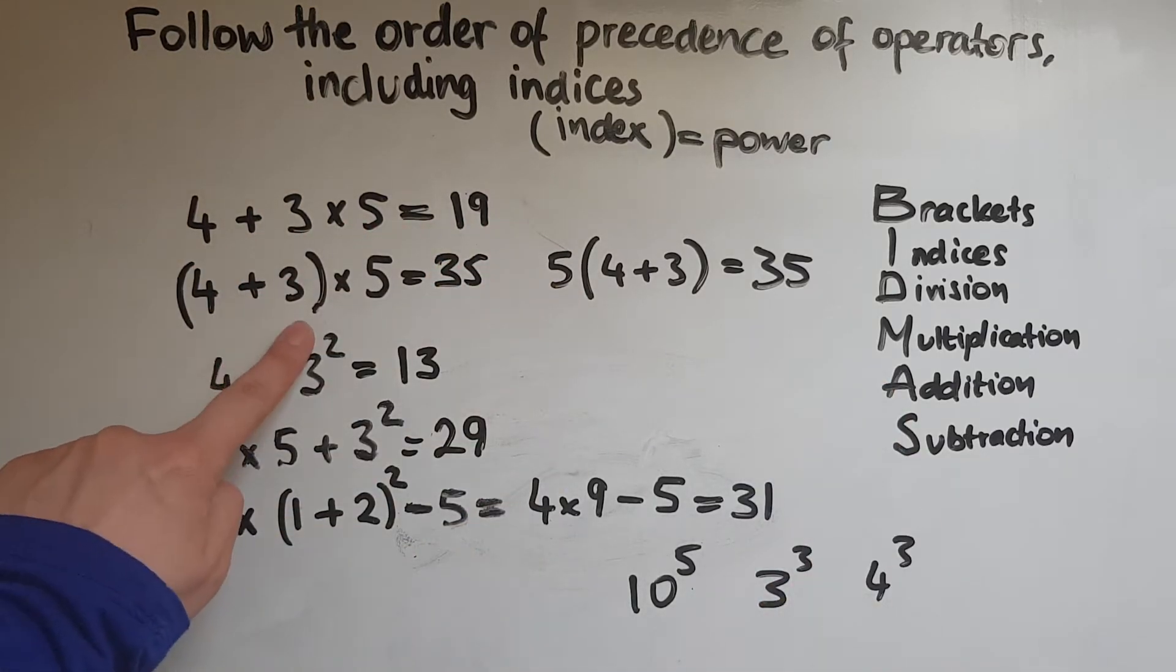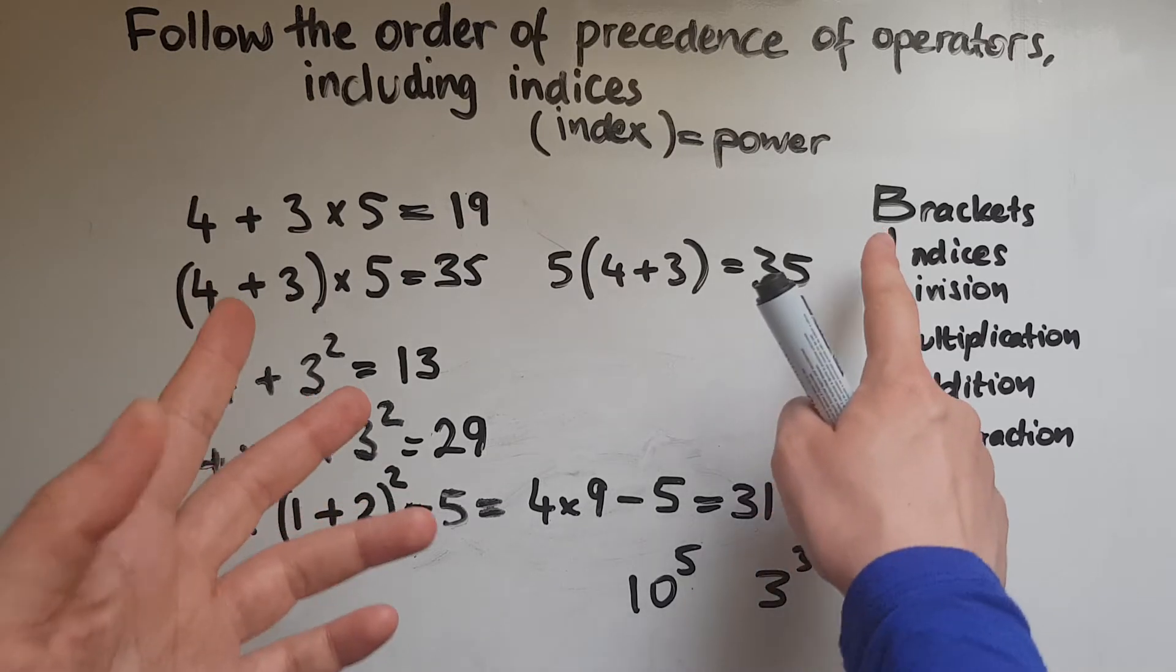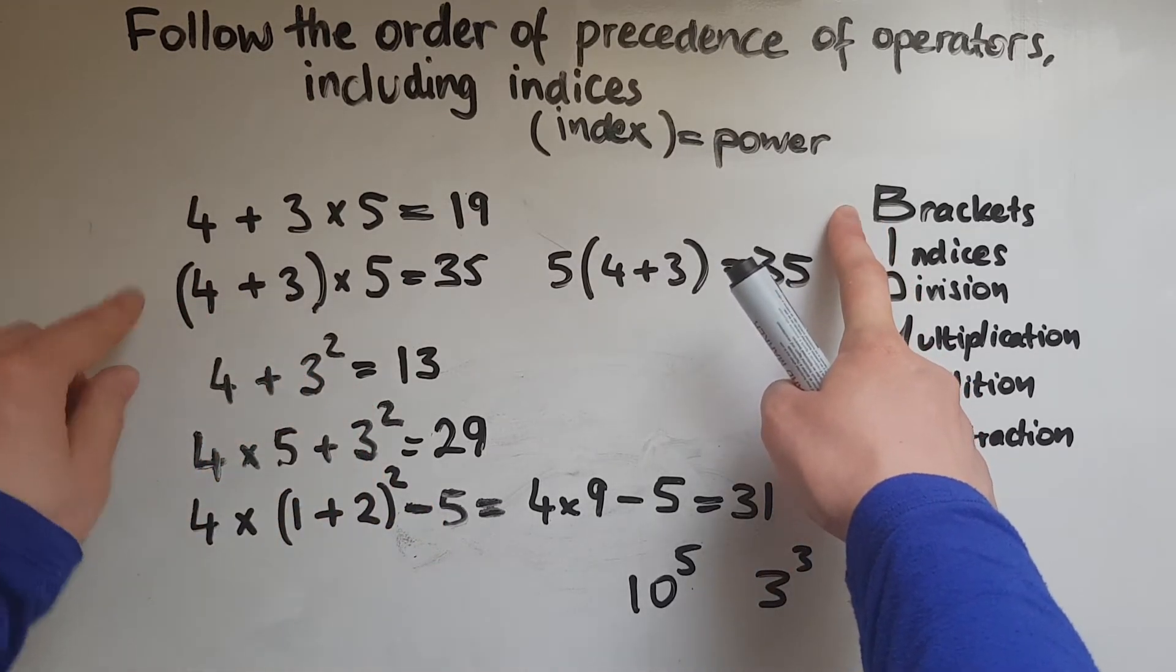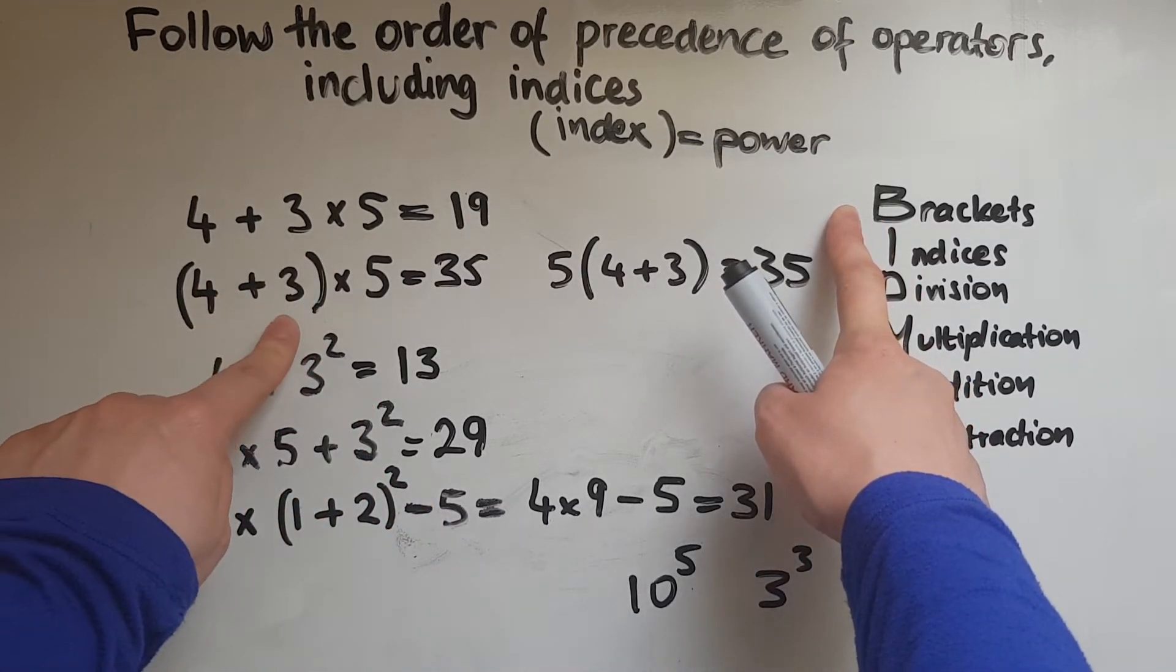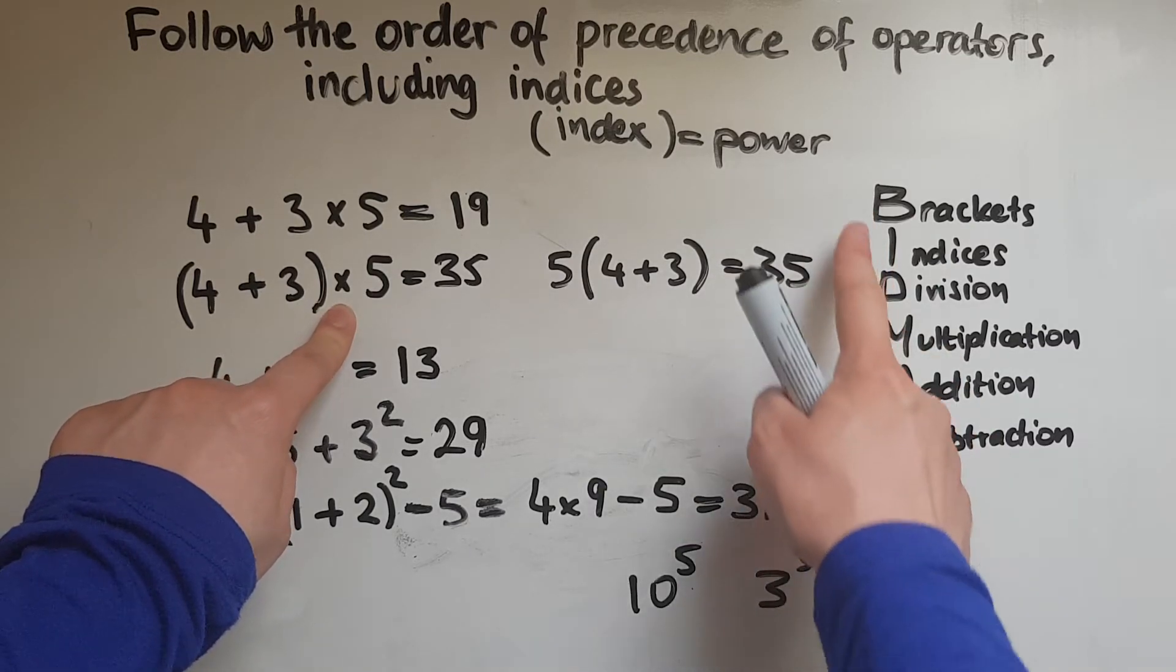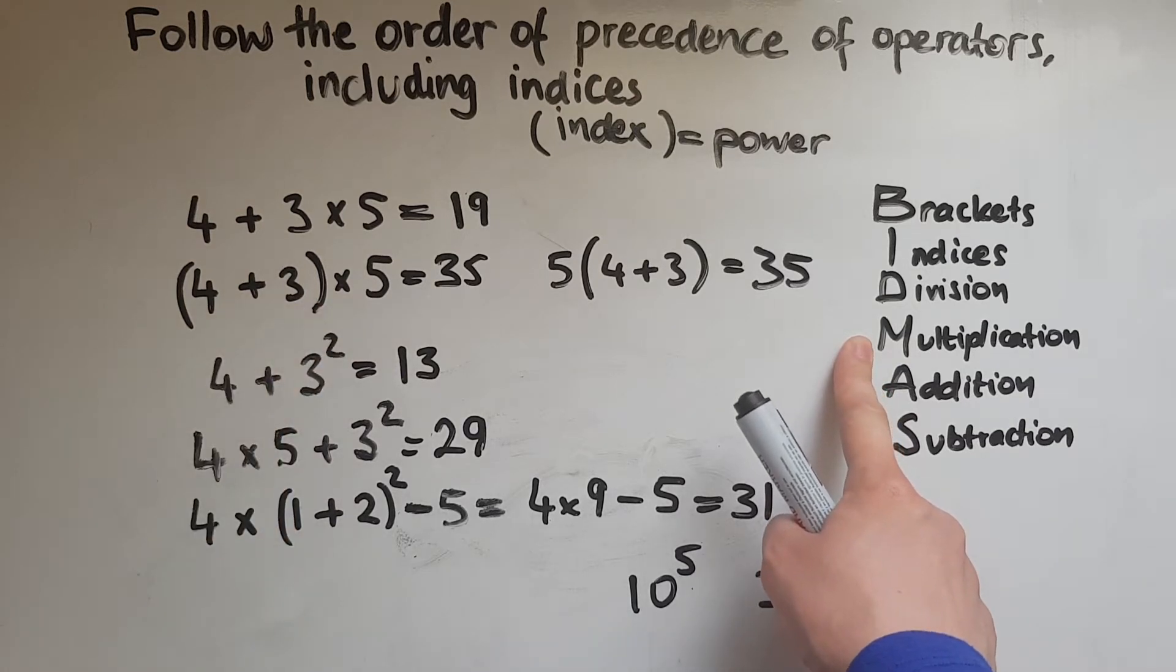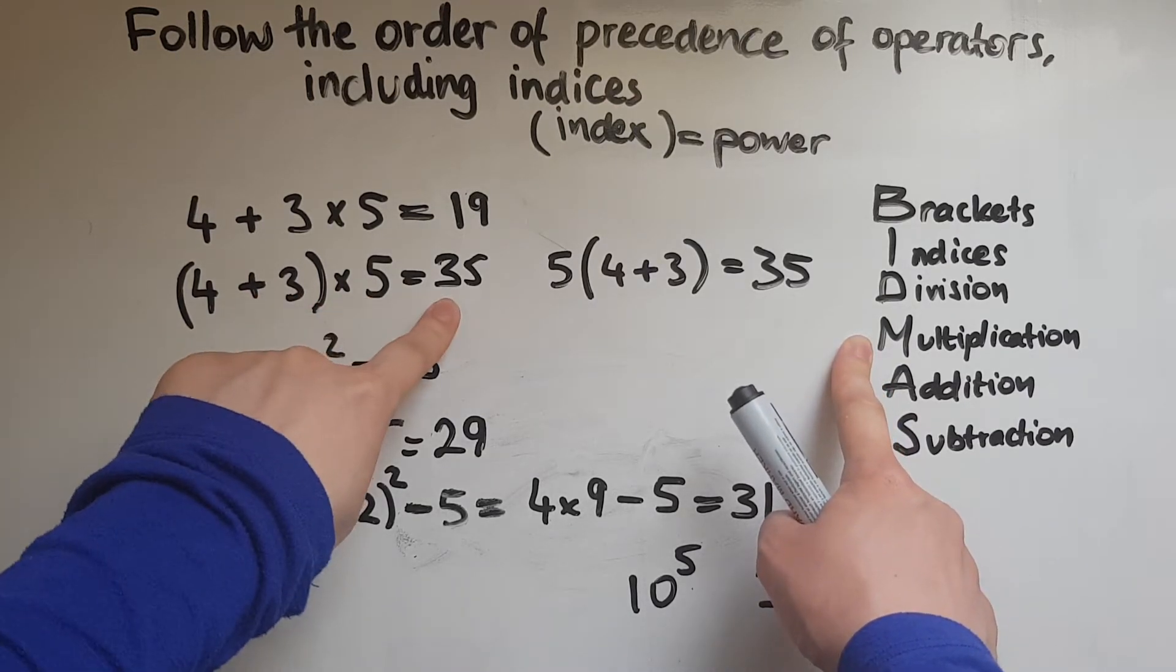Now looking at this, we've got addition, multiplication and brackets as well. So which one of them comes first? BIDMAS. Brackets comes first. So we do the brackets. So 4 add 3 which is 7. And then comes the multiplication because it's lower in the list. So 7 times 5 gives us 35.